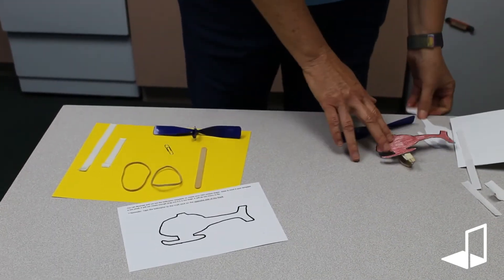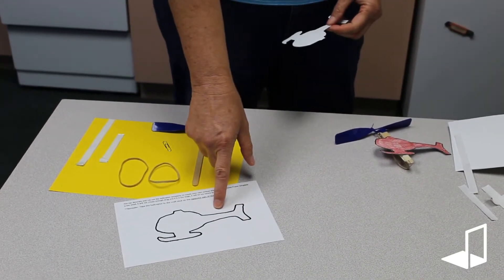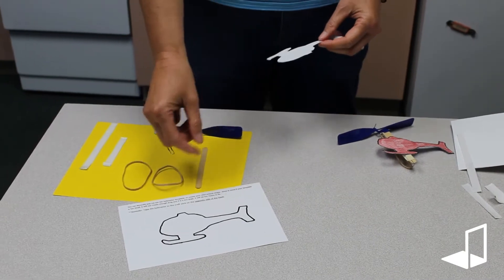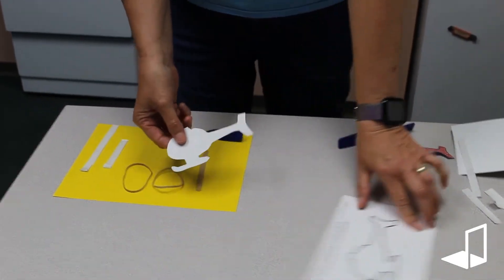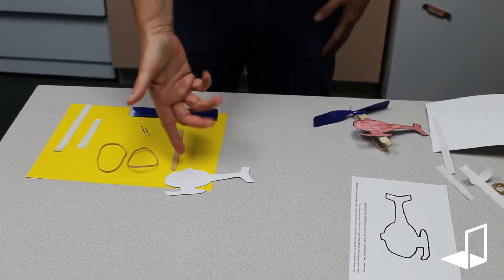The first step is to cut out your helicopter. You can color it first—it might be easier to color it before you cut it out. You should have something like that. You can use the template that we provide or you can make your own shape and size for your helicopter model.